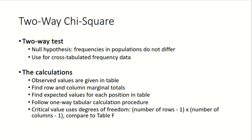Next we're going to look at a two-way chi-square test, which builds off of two variables in a frequency distribution we call the crosstab. The null hypothesis is that the frequencies in the populations do not differ, meaning that any differences we see in the table are just due to sampling error.